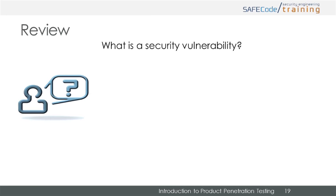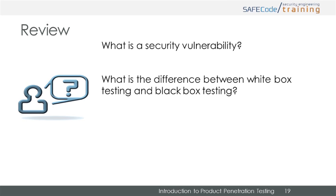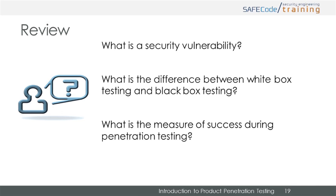Let's review. A security vulnerability is an implementation bug, an architectural flaw, or deployment flaw that has a security implication. Black box testing is a type of blind testing using only publicly available information about the target implementation, while white box testing typically incorporates implementation information, source code, and other materials that may not be public knowledge. Compromising the target's security objectives is a primary way to denote a successful penetration testing attack.